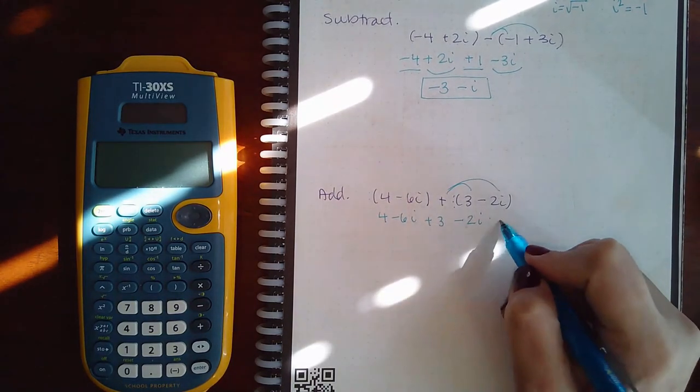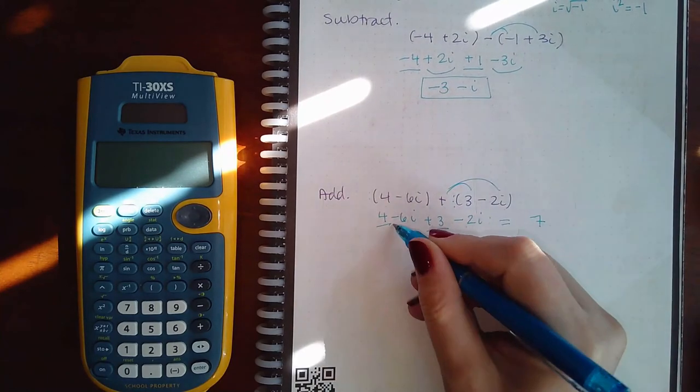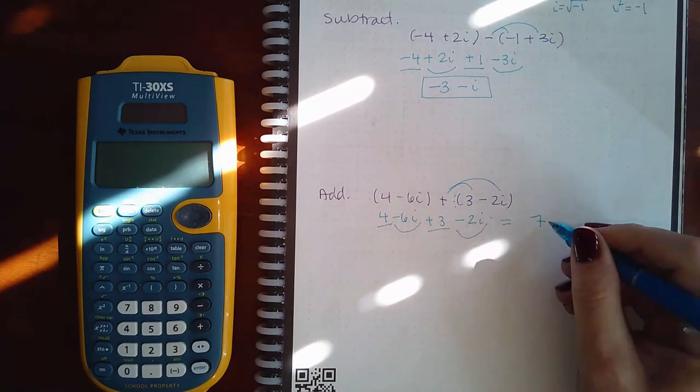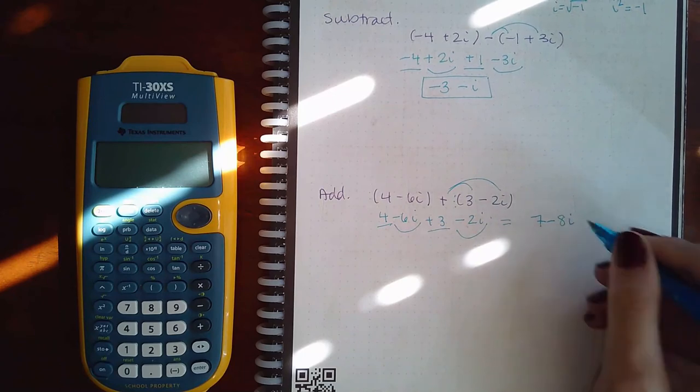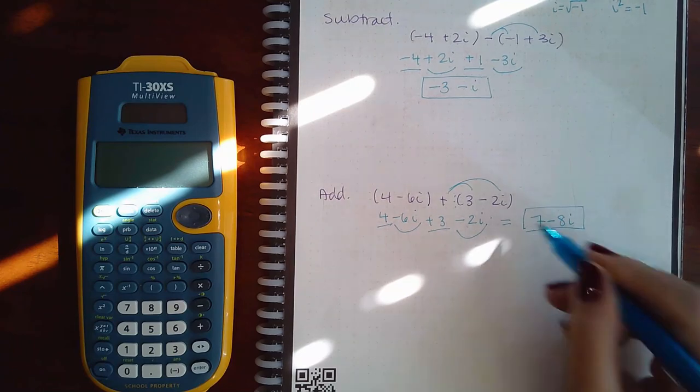If I combine my like terms, 4 plus 3 is 7, and negative 6i and negative 2i make negative 8i. You're just adding and subtracting, so you're just combining the like terms.